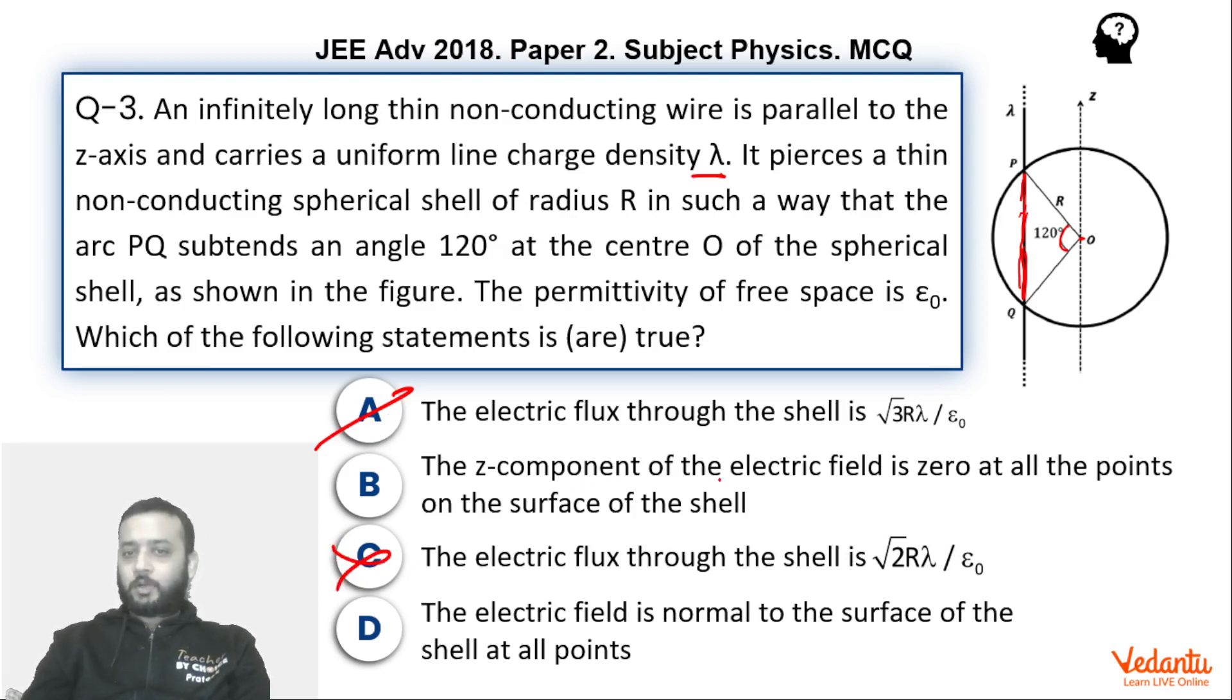Now we have to talk about the z-component of electric field is zero at all points on the surface of the shell. If you talk about the surface of the shell and see the direction of the electric field, we already know that direction of the field due to the wire is perpendicular to the wire. If you talk about the infinite wire then it's in the radial direction outwards.